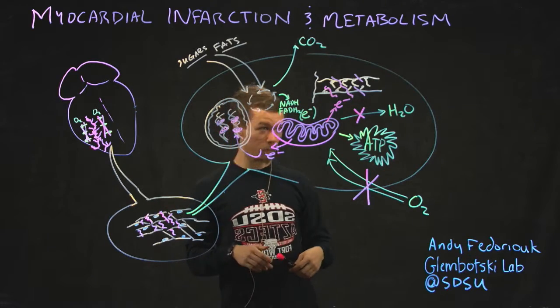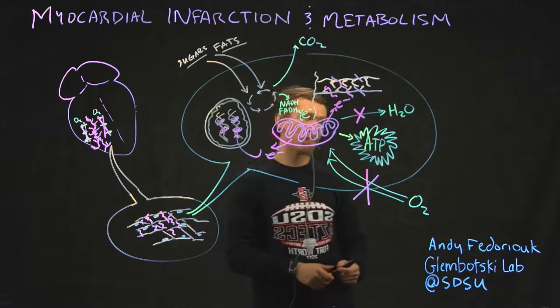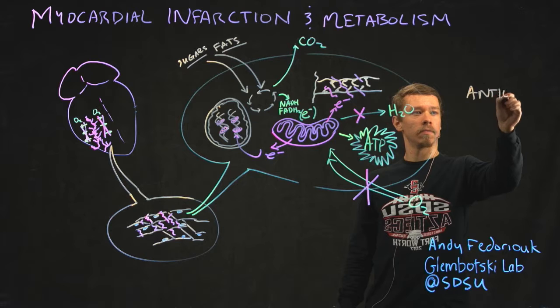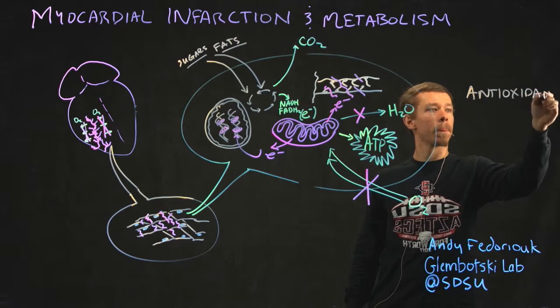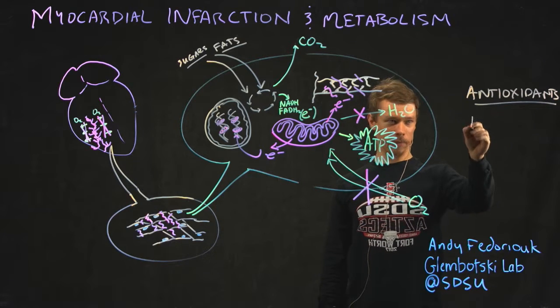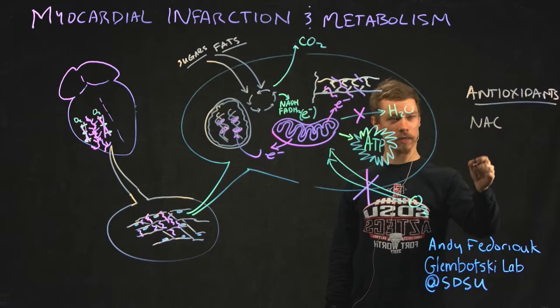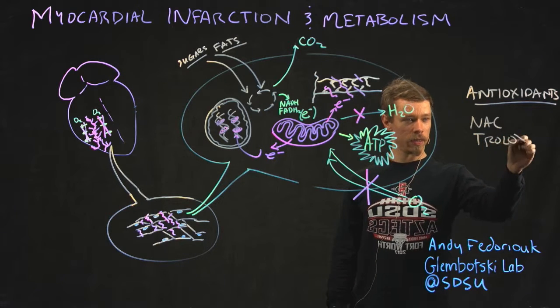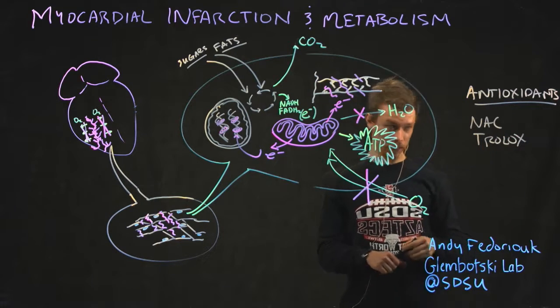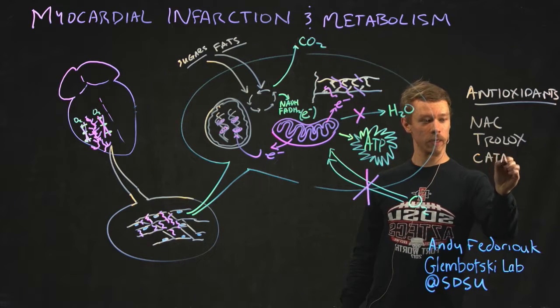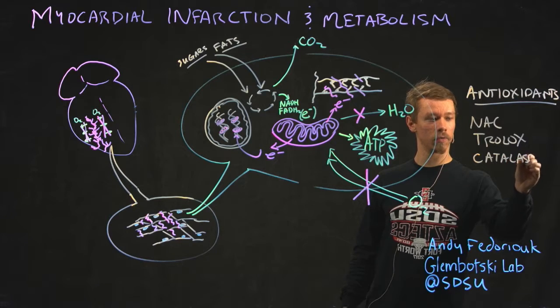So I've told you the problem. What can we do about it? The thought is, what if we have antioxidants. An example is NAC, or N-acetylcysteine, which you can buy as a supplement, or Trolox, which is another chemical you can inject that functions as an antioxidant. And of course, we have intracellular antioxidants, for example, catalase. It's an enzyme that breaks down hydrogen peroxide.